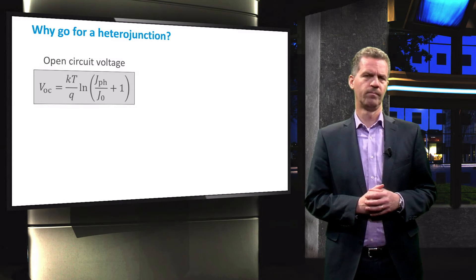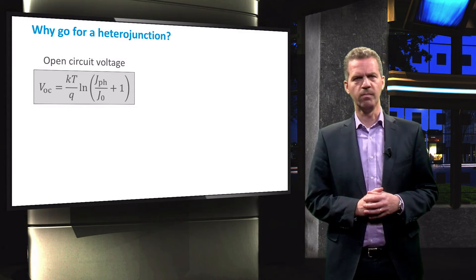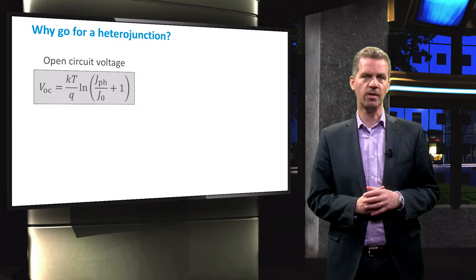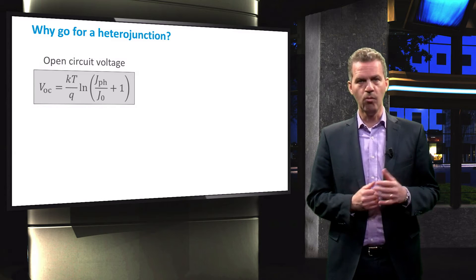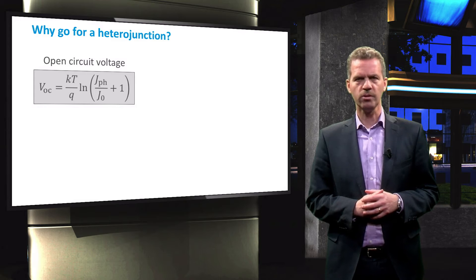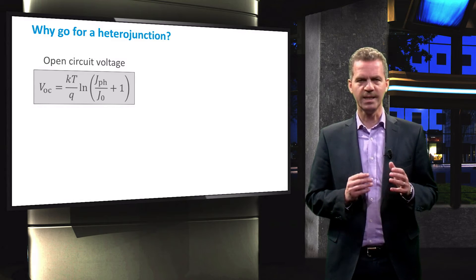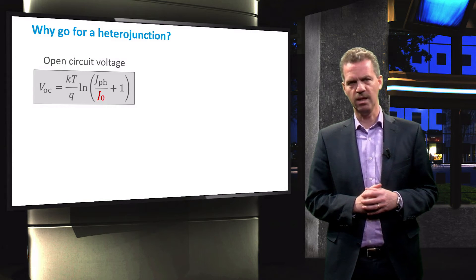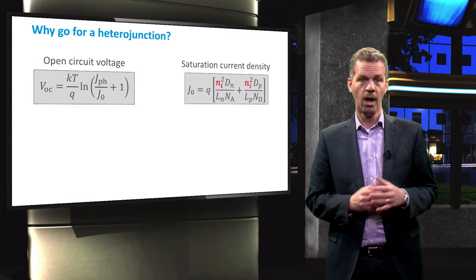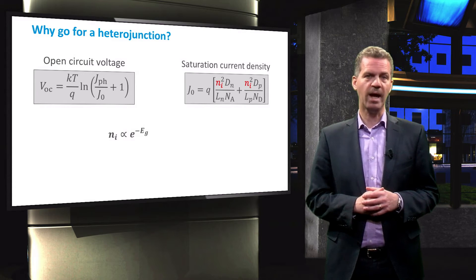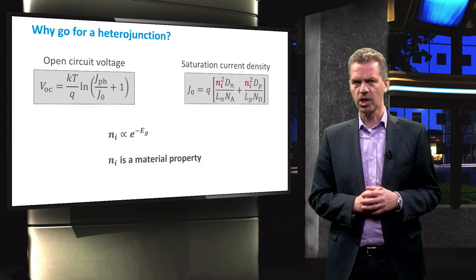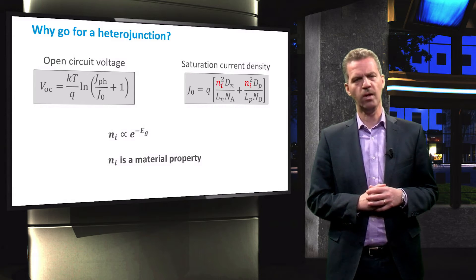So why do we want a heterojunction? As discussed in previous videos, a solar cell can be described by the Shockley-Diode equation. One of the parameters we obtain for our p-n junction under illumination is the open circuit voltage. If we look at the equation for the open circuit voltage, we see that the only term that is not a constant or related to the photocurrent is J0, the saturation current density. J0 depends on the intrinsic carrier concentration of the material, which in turn is related to the band gap and is thus a material property.